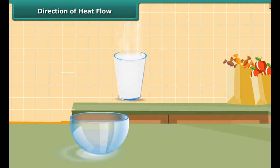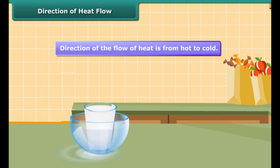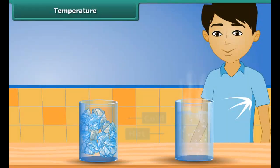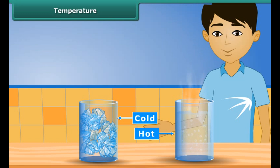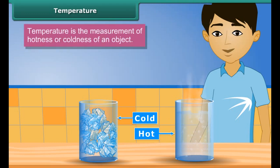Let us perform an activity to understand the concept of direction of heat flow. We place a glass of hot milk in a dish with cold water. After some time, the milk gets cooled and the water gets warm — both milk and water come to lie at the same temperature. The direction of the flow of heat is from hot to cold.